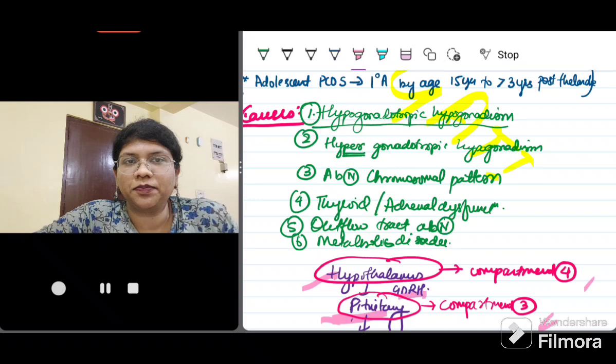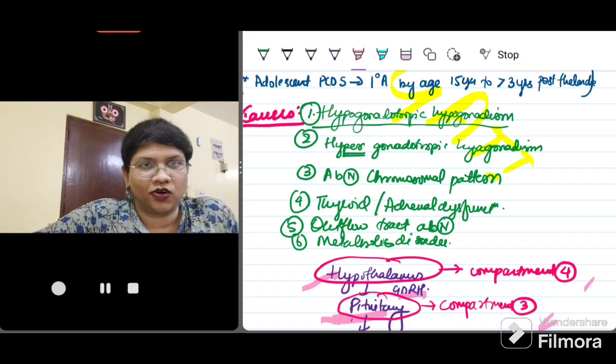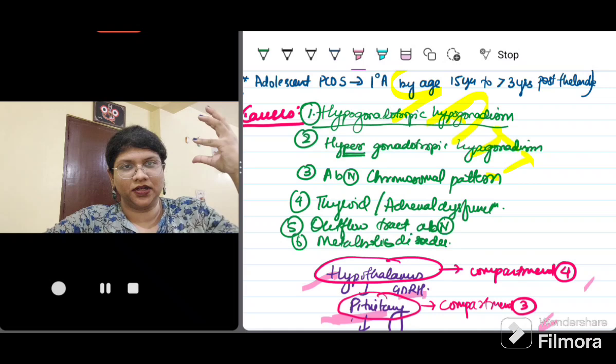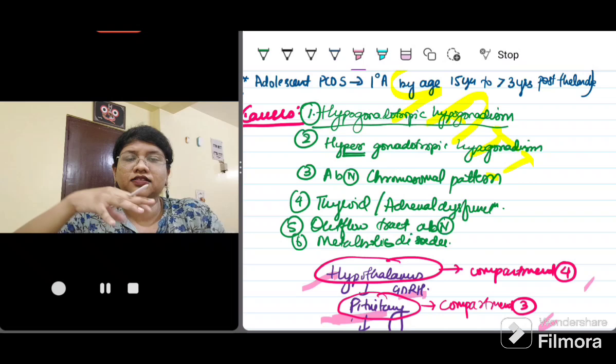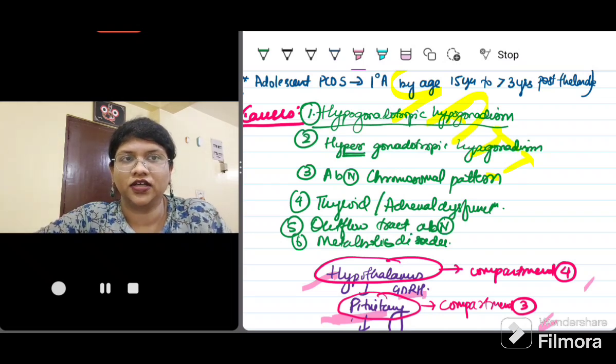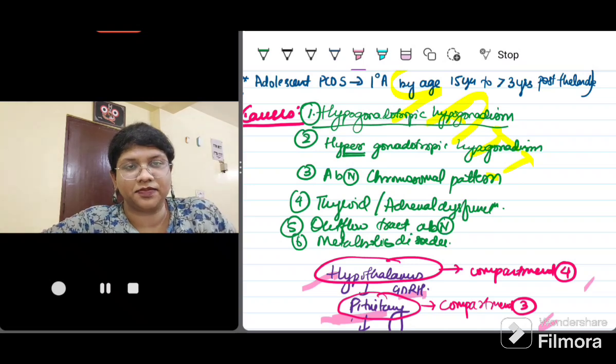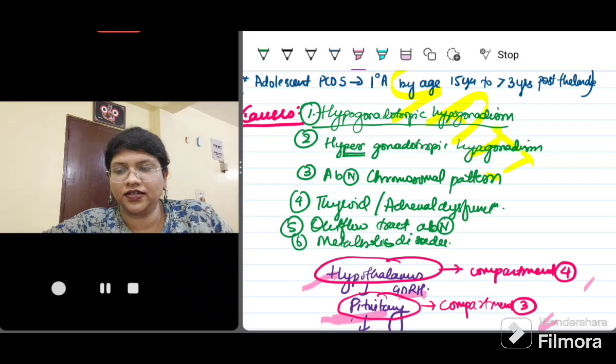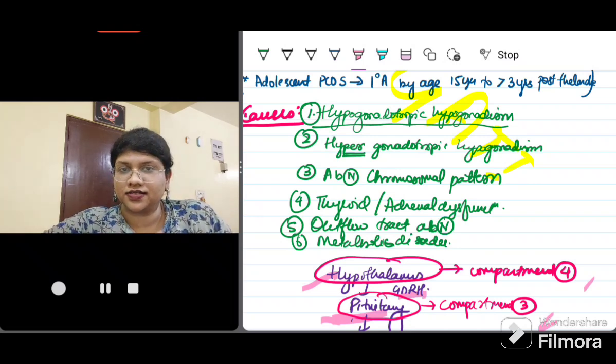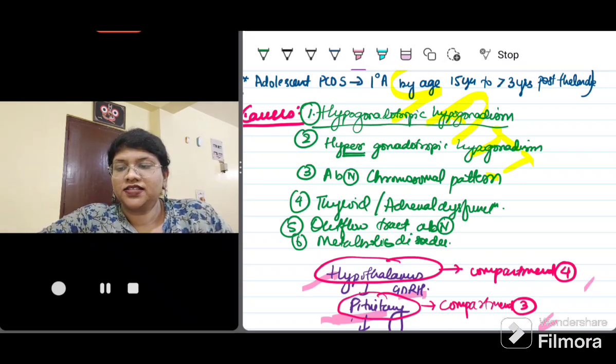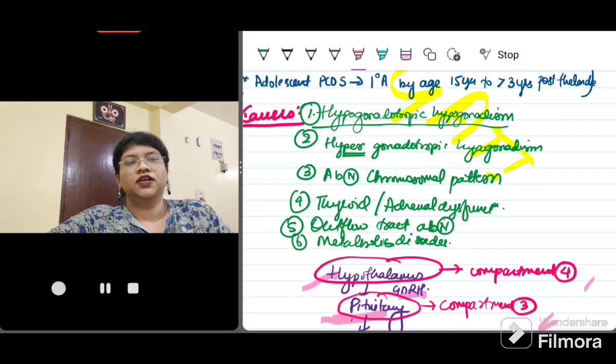Causes of hypergonadotropic hypogonadism include all your ovarian causes. Basically, the higher function is normal, but since the ovary is not functioning, the FSH and LH have increased. Hypergonadotropic hypogonadism means all your gonadal causes. It includes primary ovarian failure, which can be idiopathic, chemotherapy induced, radiation induced, mumps oophoritis, resistant ovarian syndrome, gonadal dysgenesis or agenesis, aromatase deficiency, and 17-hydroxylase deficiency.